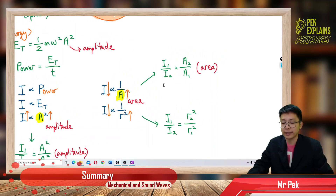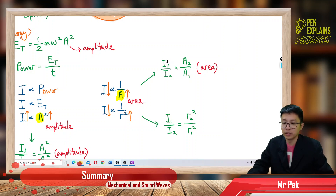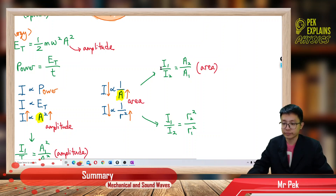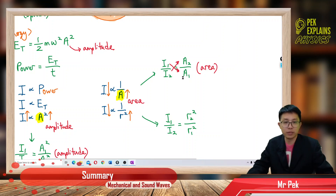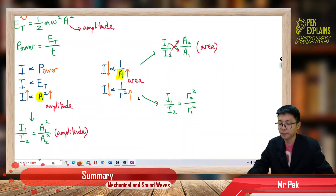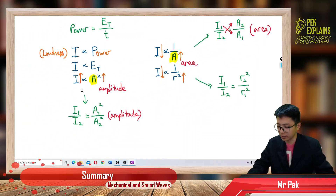Since intensity is inversely proportional to area, we make the ratio accordingly: if intensity₁ is above, area₁ is below; if intensity₂ is below, area₂ is above. That's what happens with an inverse proportion — one on top, one below. Unlike a direct proportion, where both are at the same level.